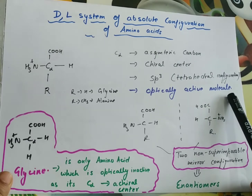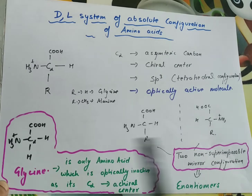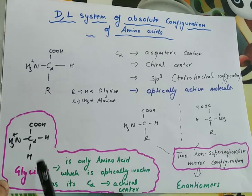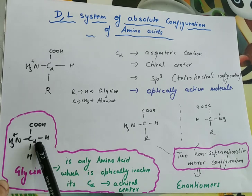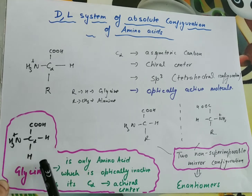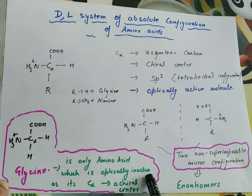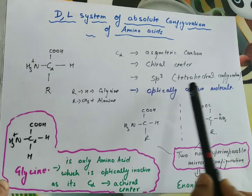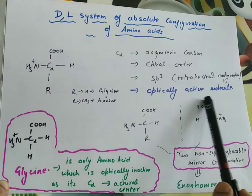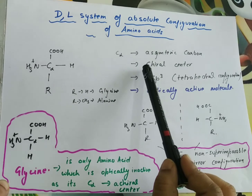All amino acids become optically active molecules except glycine, in which R is H. When R is H, the C-alpha carbon is not a chiral center — glycine is a symmetric molecule, and symmetric molecules are optically inactive. So glycine is the only amino acid which is optically inactive.